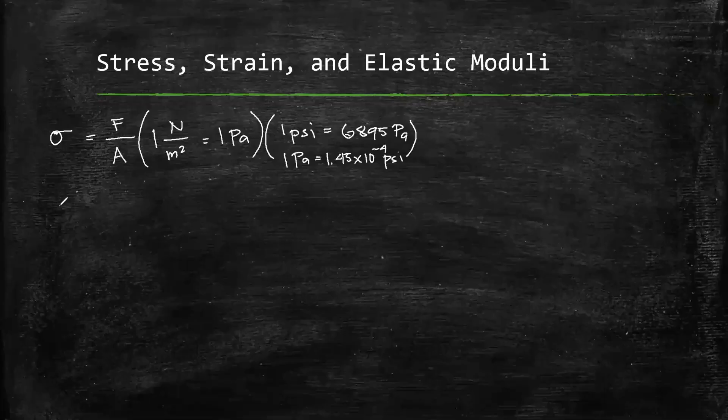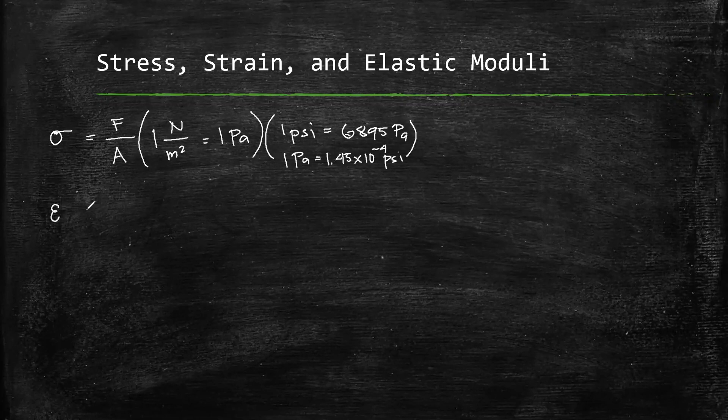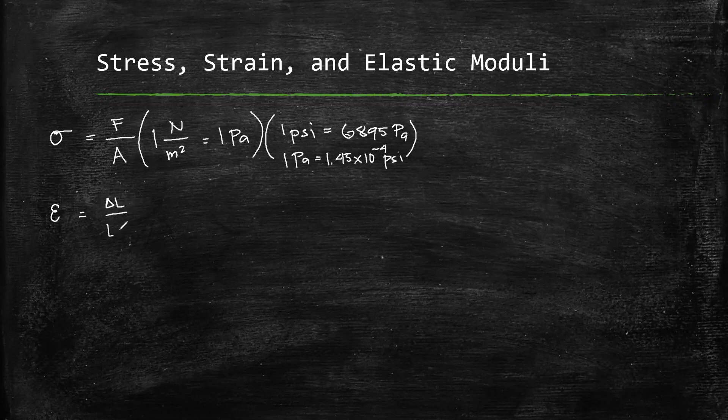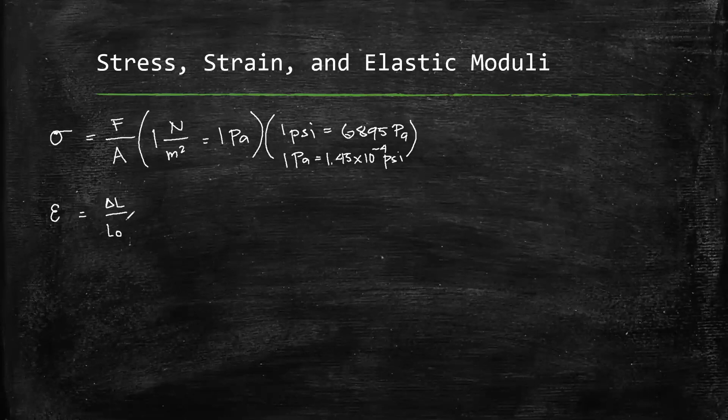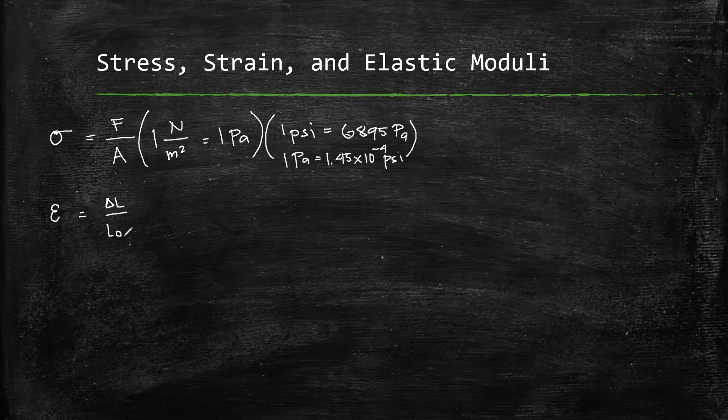Strain: our symbol is ε. Strain is the ratio of the elongation to its original length, or change in length Δl over l₀, the original length. This is a unitless quantity.